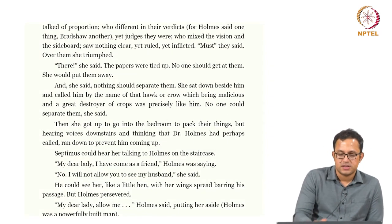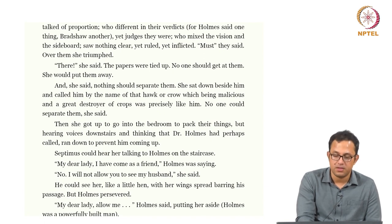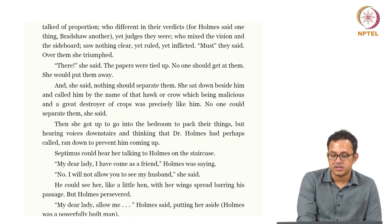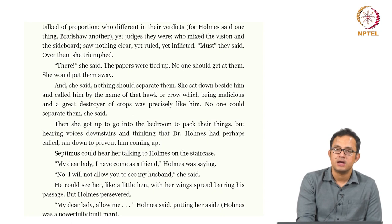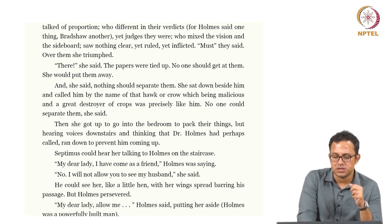Continuing from where we ended: she said nothing should separate them. She sat down beside him and called him by a name of the hawk or crow — a destroyer of crops — which was precisely like him. He has been called a predatory bird. Then she got up to go to the bedroom to pick up things, but hearing voices downstairs and thinking that Dr. Holmes had perhaps called, she ran down to prevent him coming up. She hears Holmes arrive and wants to stop him, as he has come with people intending to take Septimus away — an intention of coercion which distresses Septimus even more.